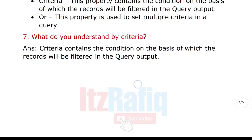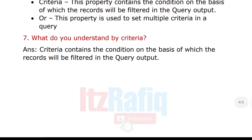Number seven: what do you understand by criteria? Criteria contains the condition on the basis of which records will be filtered in the query output. For example, in a student table, if I want to display only students who got more than 60 percent in an examination, then 'greater than 60' will be the criteria for that particular query.